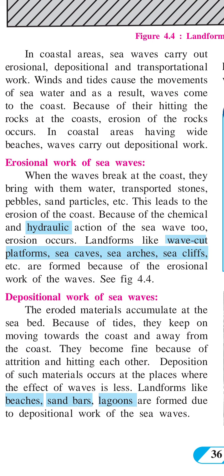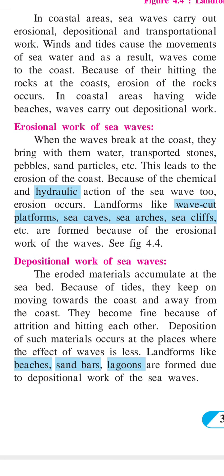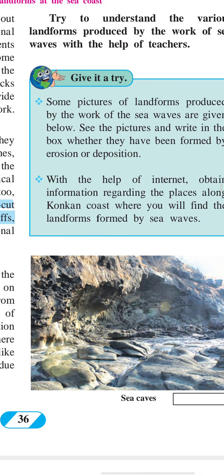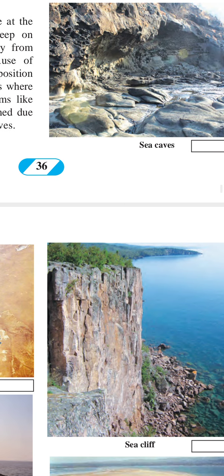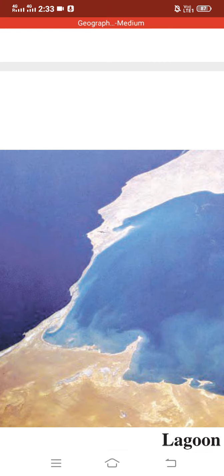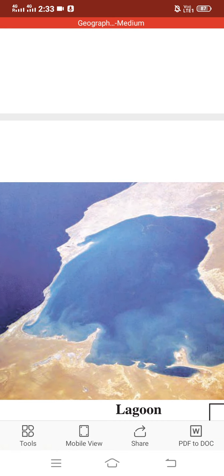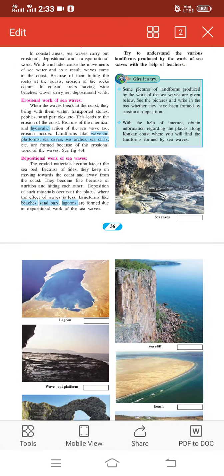Landforms like beaches, sandbars, and lagoons are formed due to the depositional work of the sea waves. Pebbles, stones, sand, and many other things are carried by sea waves and deposited on coastal regions. A lagoon is a small water body separated from the main ocean — sand particles are deposited, dividing a water body from the main ocean, and that separated water body is called a lagoon.